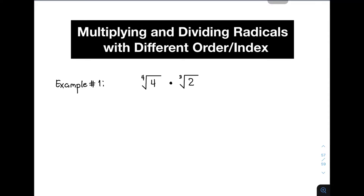We have example number one. We have the given radicals: the fourth root of four times the cube root of two. Basically, if you're multiplying radicals, they need to have the same index or the same order. So in this case, we have the fourth root of four and the cube root of two, wherein they have different indices — four and three. So the question is: how do we simplify or multiply this kind of radicals with different order or different index?